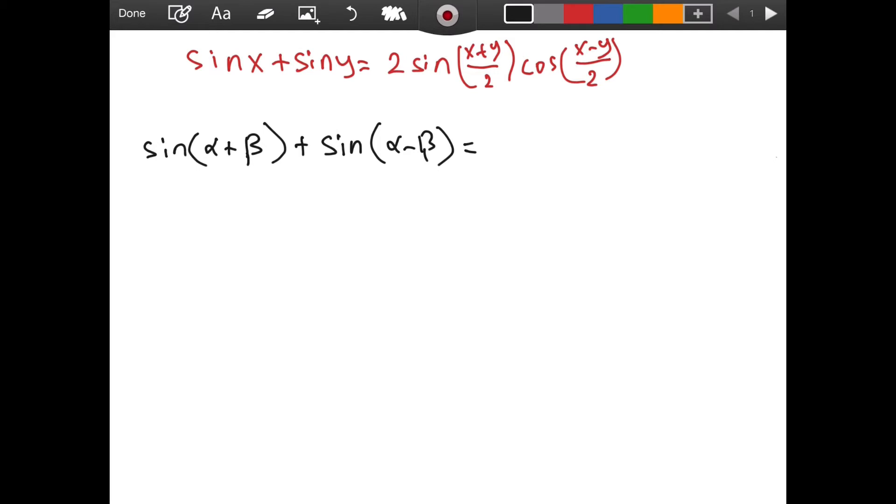For the first term, we get sine of alpha times cosine of beta plus cosine of alpha times sine of beta. This was our first term, and then we have a plus here.